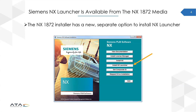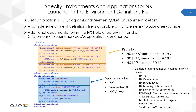NX Launcher is available from the NX 1872 install media. When you download that from GTAC, unzip it, and start the launcher, you'll see that right underneath our Install NX button there will be an Install NX Launcher button. The specific environments available once you launch NX Launcher are specified by an XML file. The default location is the C drive, then Program Data, then Siemens — that's where your XML file will be. There's a sample environment definition file included when you install NX Launcher, but I think it's actually easier to set everything up directly from the XML file instead of trying to do it from the GUI itself.